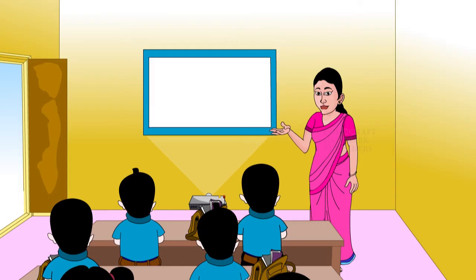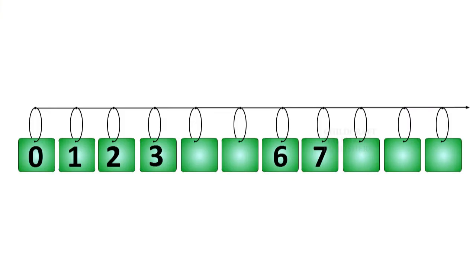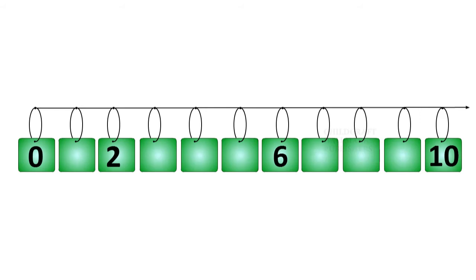Insert the missing numbers on the number lines given below: three, four, five, eight, nine, ten. One, three, four, five, seven, eight, nine.